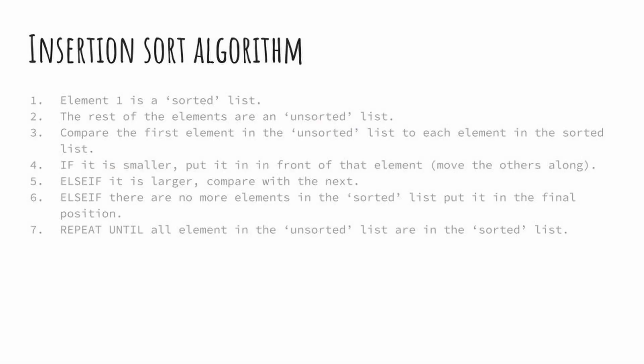For the insertion sort algorithm: element one is placed in the sorted list; the rest are in the unsorted list. We compare the first element in the unsorted list to each element in the sorted list. If it is smaller, put it in front of that element and move the others along. If it is larger, compare with the next. If there are no more elements in the sorted list, put it in the final position. Repeat until all of the unsorted list has been merged with the sorted list.